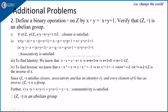Since (Z, ∘) satisfies closure, associativity, has identity element -1, and every element has an inverse, (Z, ∘) is a group. Further, x∘y = x + y + 1 = y + x + 1 = y∘x, so commutativity is satisfied. Therefore, (Z, ∘) is an abelian group.